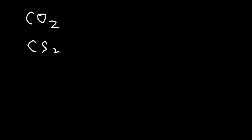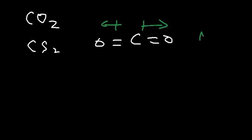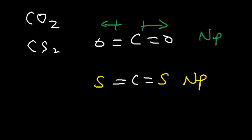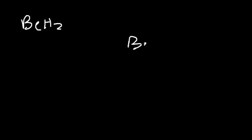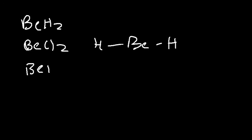Compounds with linear geometry, like CO2 and CS2, are nonpolar — their dipole moments cancel. Carbon disulfide's carbon-sulfur bond is essentially nonpolar since both carbon and sulfur have electronegativity values of about 2.5. Other linear examples include BeH2, BeCl2, and BeF2 — they all have the same linear structure and are nonpolar.